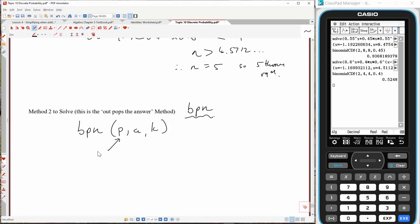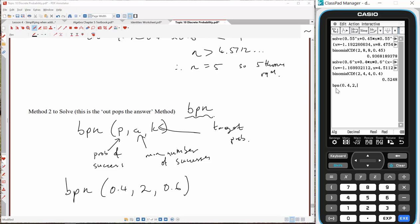The way it works is you type in BPN, and then the parameters that you need to pass it. It wants three things off you. The first thing is P, second thing is A, and the third thing is K. P is the prob of success. In this question here, we've got BPN, and the probability of success was 0.4. The A value is the min number of successes. In this case, it was 2. We wanted 2 or more. And K is the target prob. In this case, it's 0.6 or more. So all you do is you feed it those three things. We're going to go BPN 0.4, 2, 0.6.